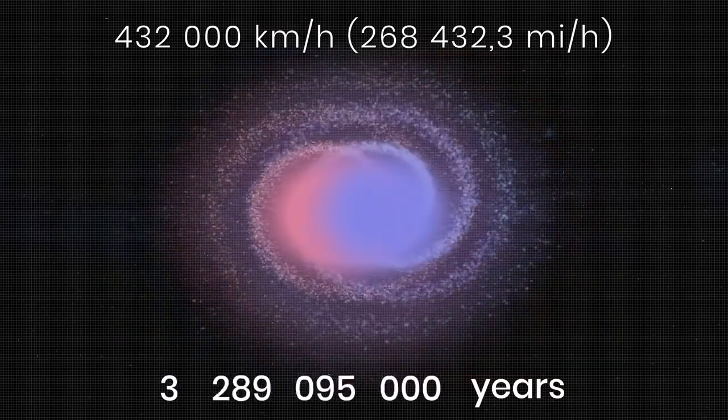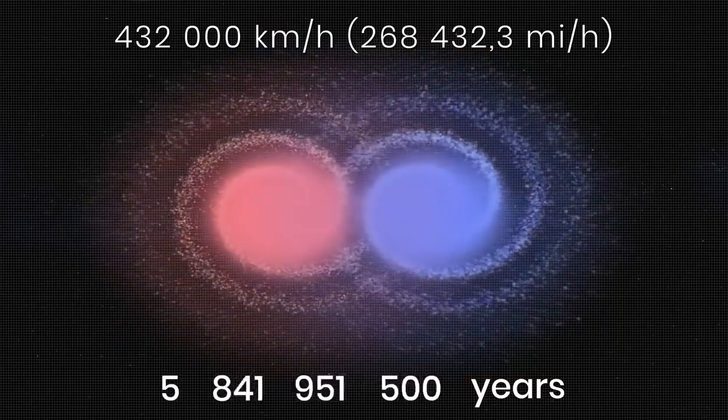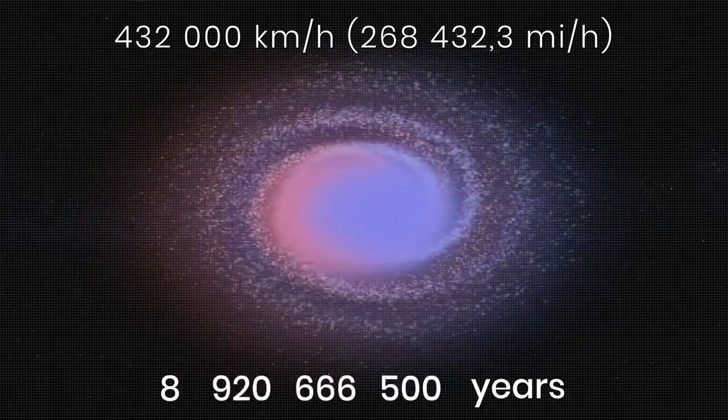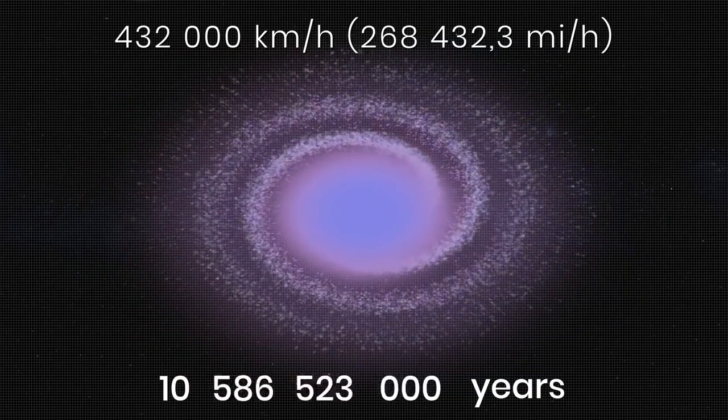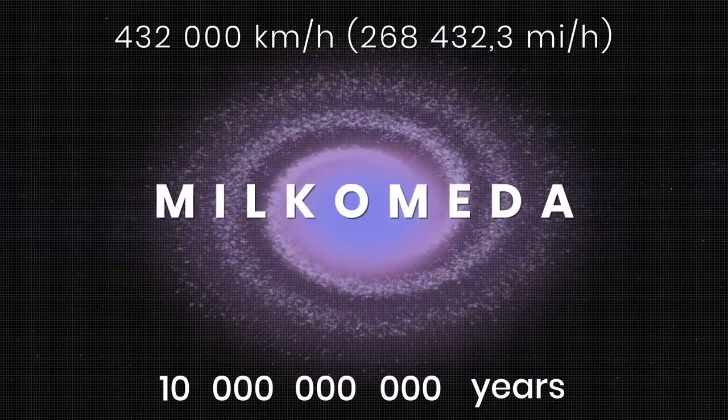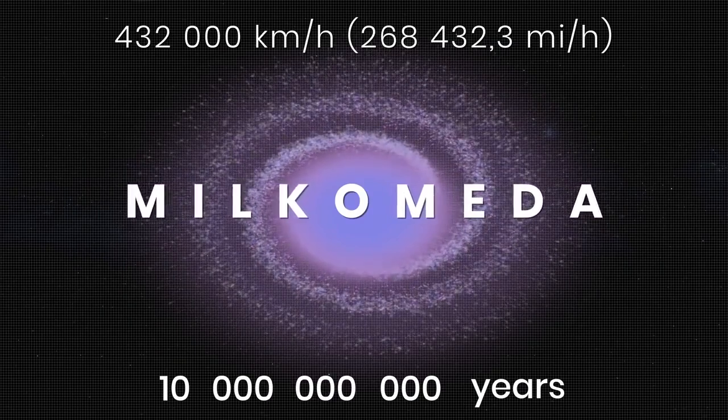Both galaxies will approach each other, and their mutual attraction will begin to pull them into an oblong shape. After that, the galaxies will pass through each other, but then the mutual attraction will again pull them back. This is how a new elliptic supergalaxy will appear. This galaxy has already been given a name, Milcomeda.